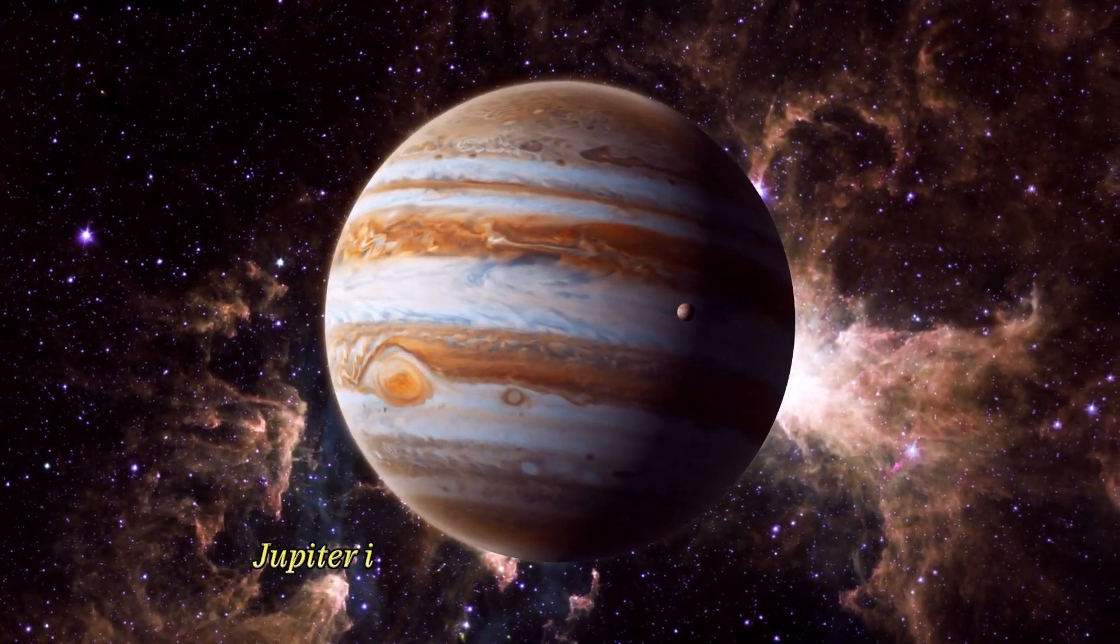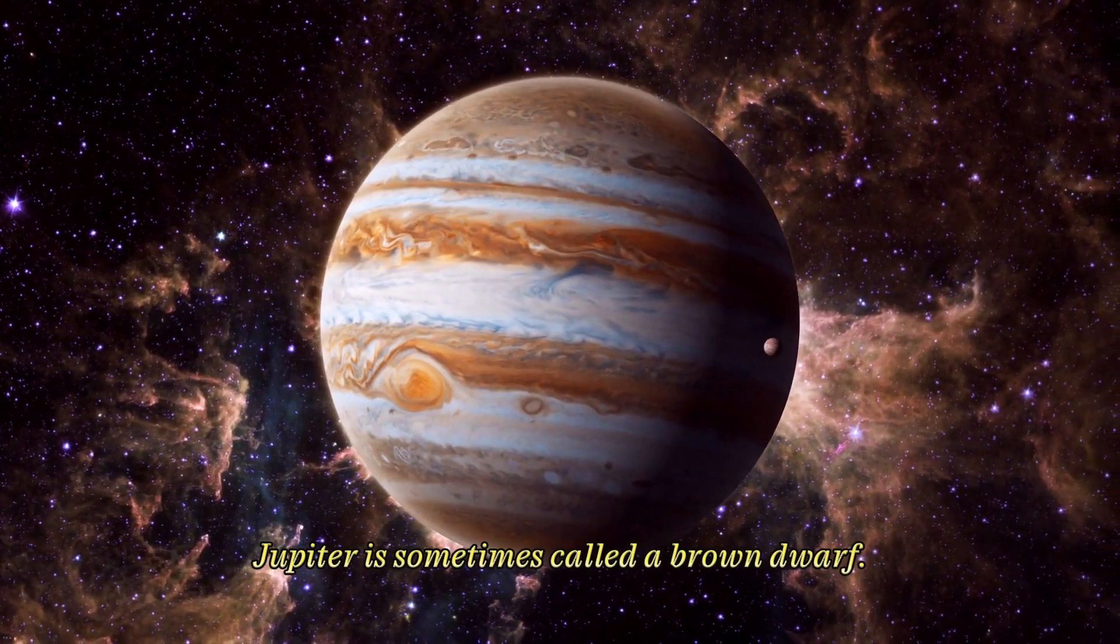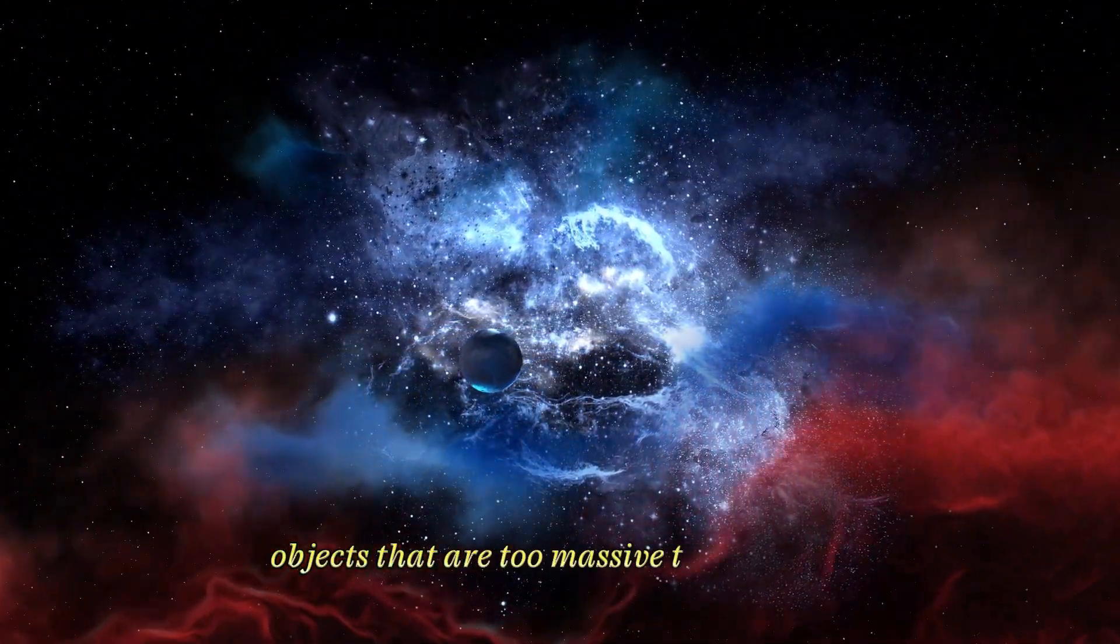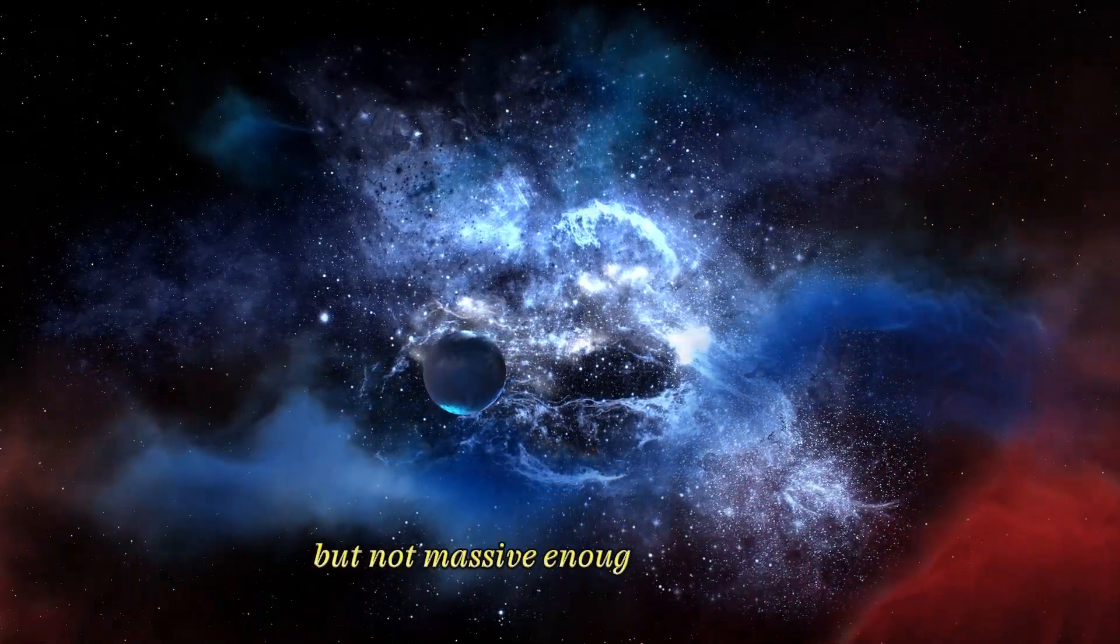For this reason, Jupiter is sometimes called a brown dwarf. Brown dwarfs are substellar objects that are too massive to be planets, but not massive enough to be stars.